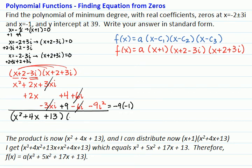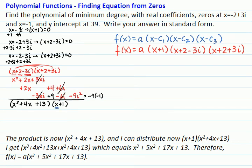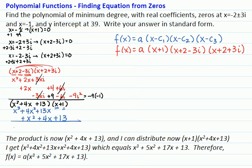Which I have to distribute with x plus 1. When I distribute the x, I get x cubed plus 4x squared plus 13x. And when I distribute the 1, I get plus x squared plus 4x plus 13.